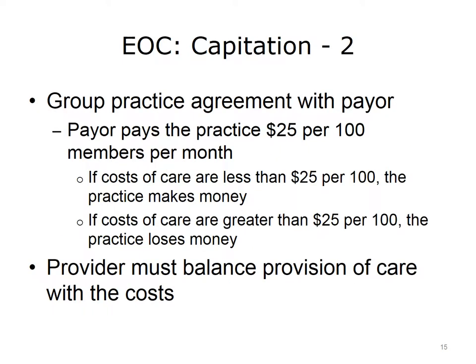However, the disadvantage is that the provider must assume the risk of loss should the cost of care exceed payments received. For example, a group practice enters into an agreement to receive $25 per member per month. For every 100 members assigned, the provider receives $2,500 per month, even if none of the patients are seen. If during a single month the cost of care for all 100 members is actually $3,500, the group practice loses $1,000 and must absorb the additional cost.